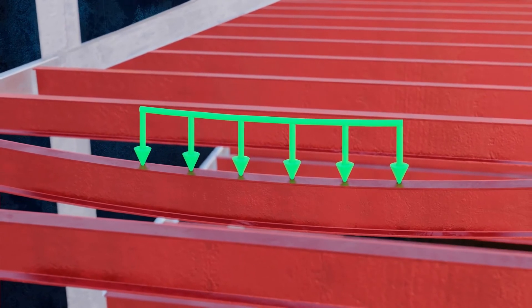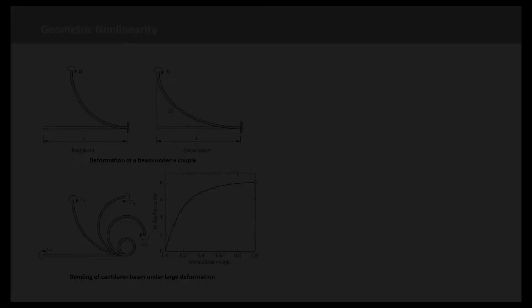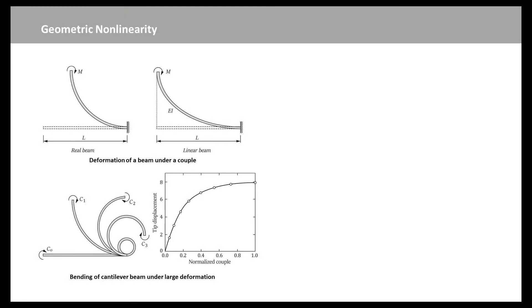If a structural system is solved using the linearity assumption, the results may end up physically erroneous. For example, consider a cantilevered beam under a couple at the tip. The magnitude of the couple is big enough so that the beam undergoes a large deformation. In reality, it is not difficult to imagine that the beam will go through deformation as the figure of real beam. In this case, the length of the neutral axis remains constant even if the beam goes through a large deformation. However, if a linear assumption is used, then the beam will deform as the figure of linear beam, which elongates the length of the beam significantly.